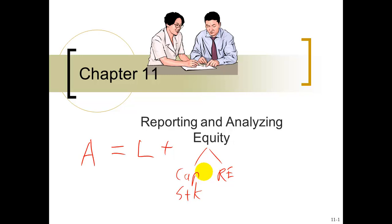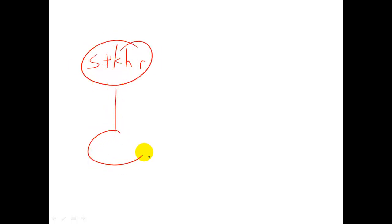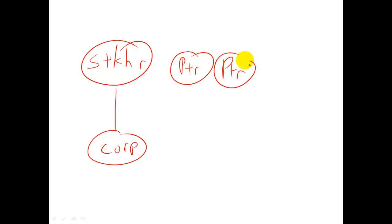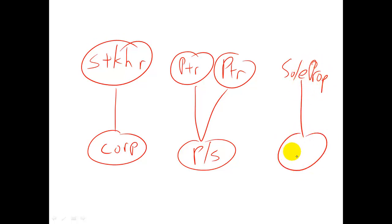Now let's take a look at the corporation, at least the ownership. The owners are called shareholders or stockholders, and you could have just one or thousands of shareholders for just one corporation. Another type of business entity is a partnership — you have to have at least two or more owners. And the simplest type of business entity is called a sole proprietorship, owned by one person, the sole proprietor. These two businesses — partnership and sole proprietorship — are unincorporated, versus a corporation.